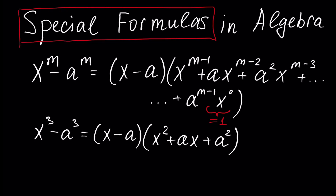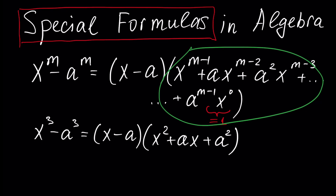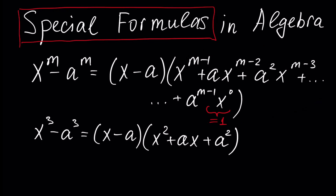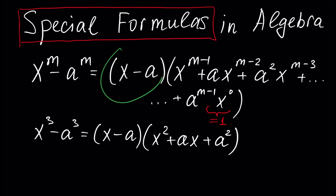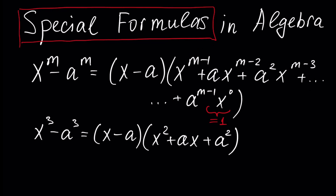This special formula in algebra: when we have a polynomial x to the power m minus a to the power m, this polynomial is divisible by x minus a. The result of the division is another polynomial of degree m minus one, because we started with a polynomial of degree m and divided by a polynomial of degree one.